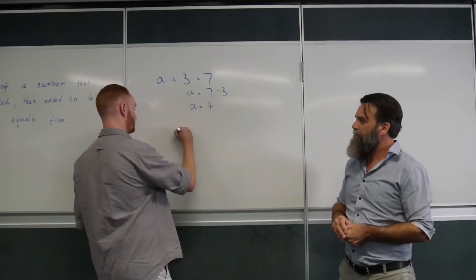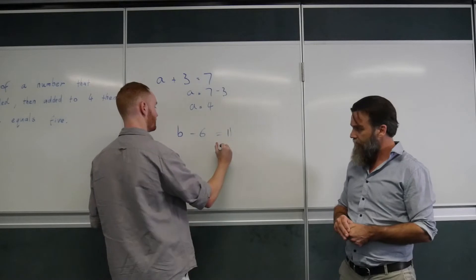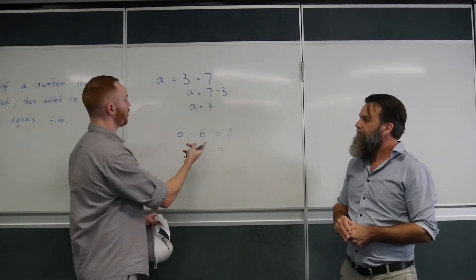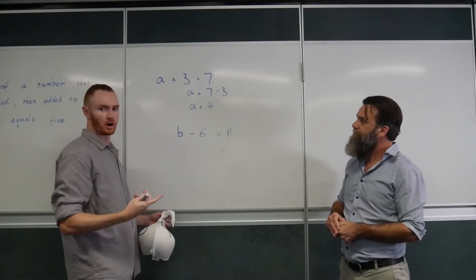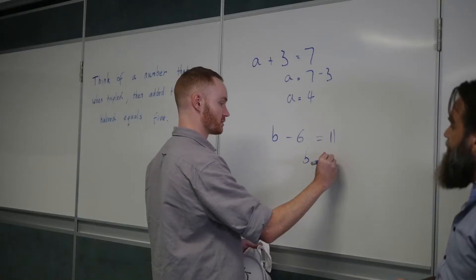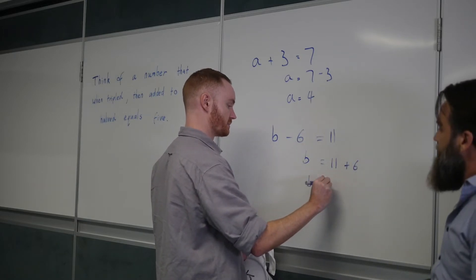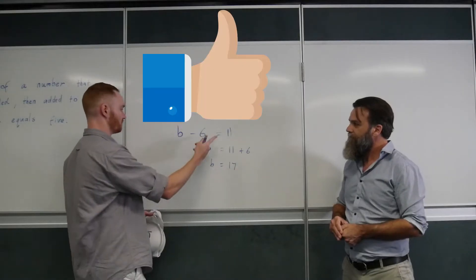So, you're thinking of a number. Yep. When you subtract 6, it equals 11. So, before, it was plus 3 and we had to minus 3. So, this time I'm going to try plussing the 6. So, 11 plus 6. B must be 17. It works.